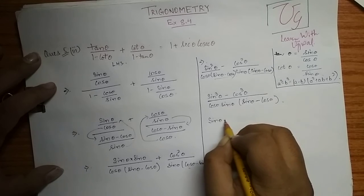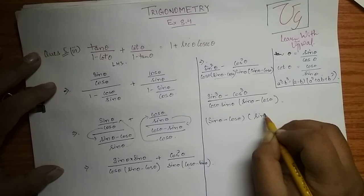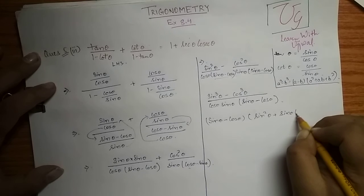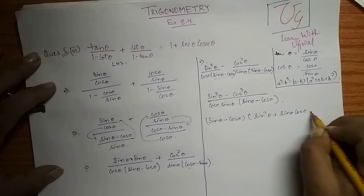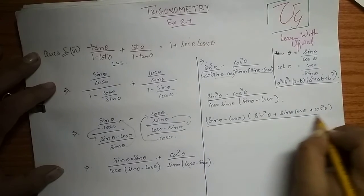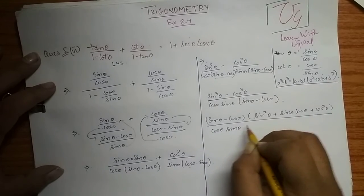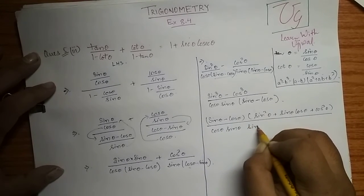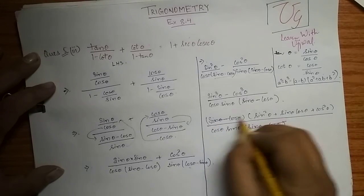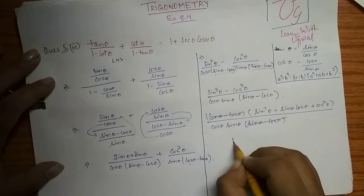Just simply use this identity here. We have sin θ minus cos θ in the numerator, and here we have sin squared θ plus sin θ cos θ plus cos squared θ. The sin θ minus cos θ factor cancels. And we know that sin squared θ plus cos squared θ is equal to 1.